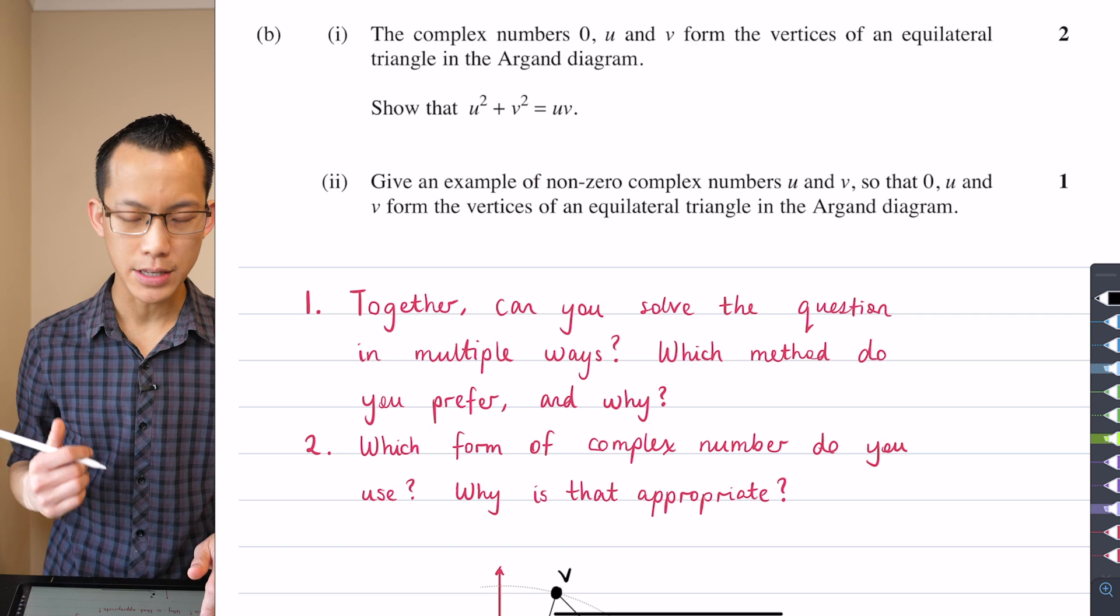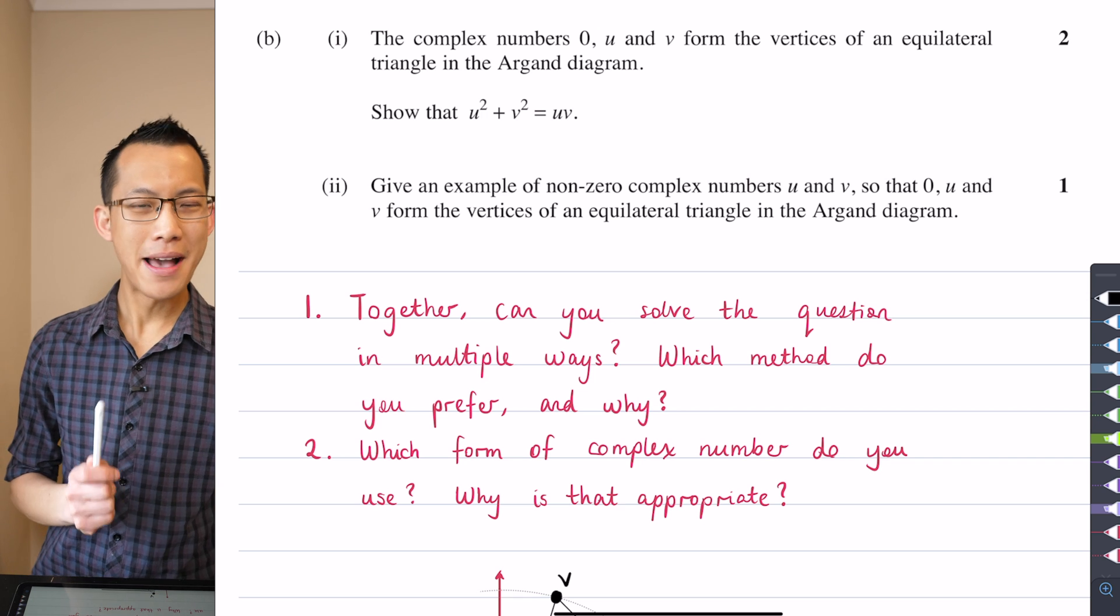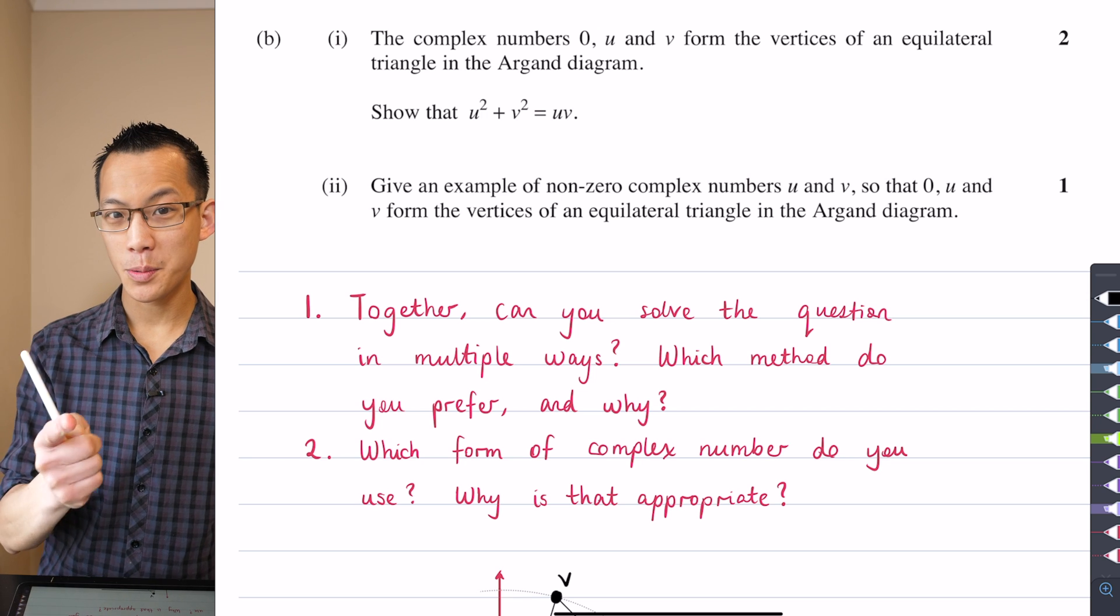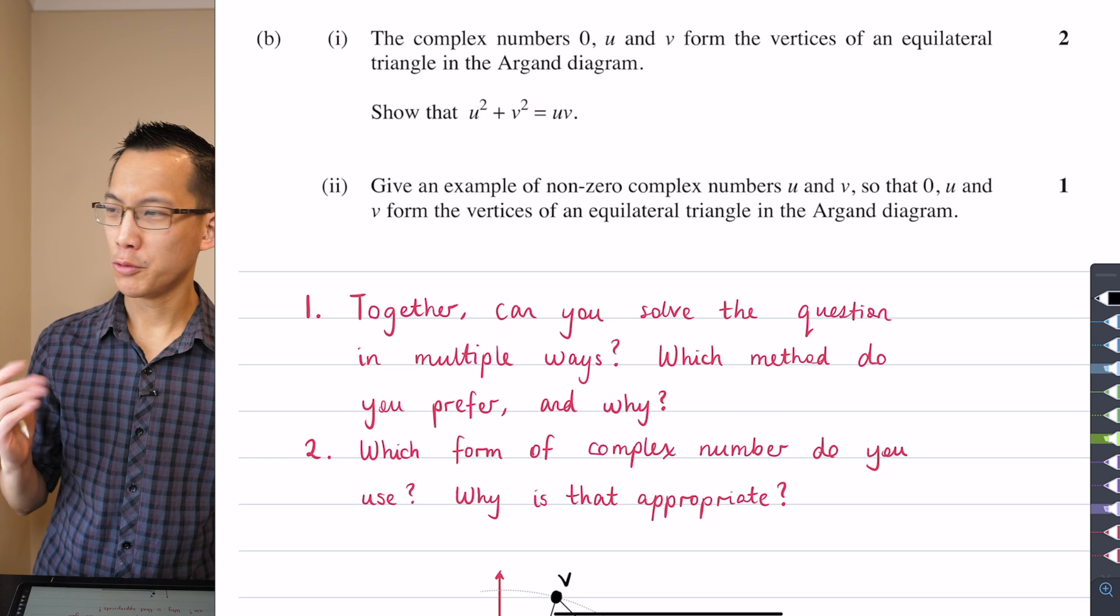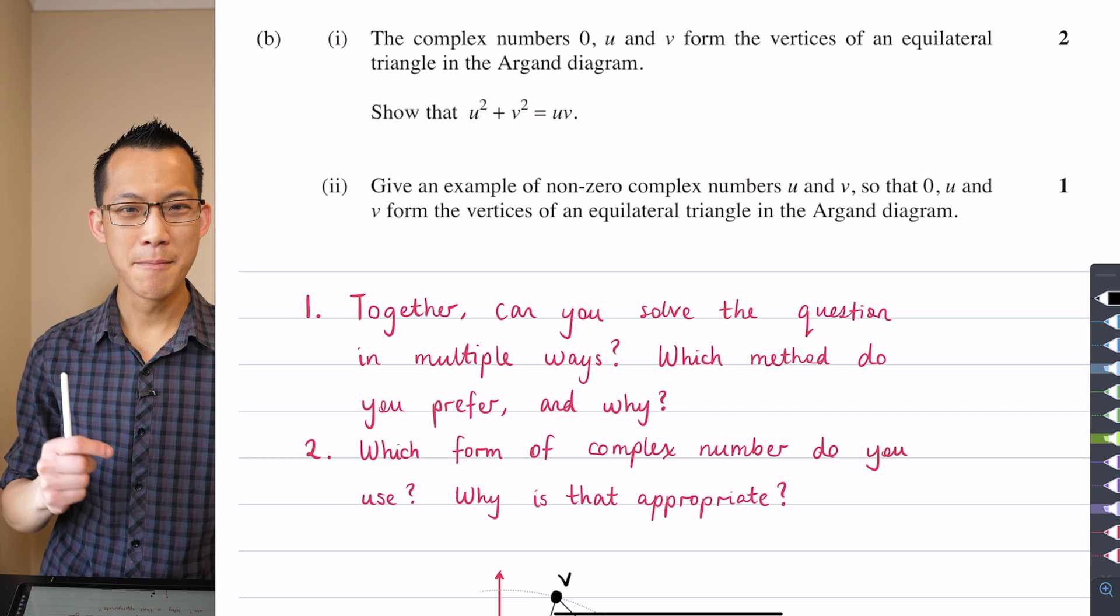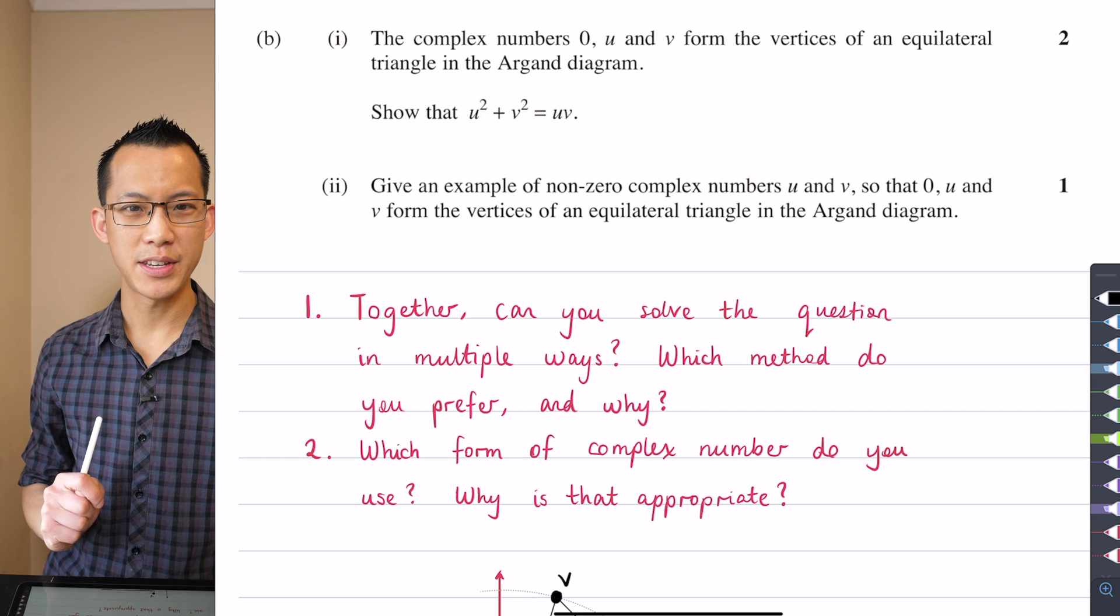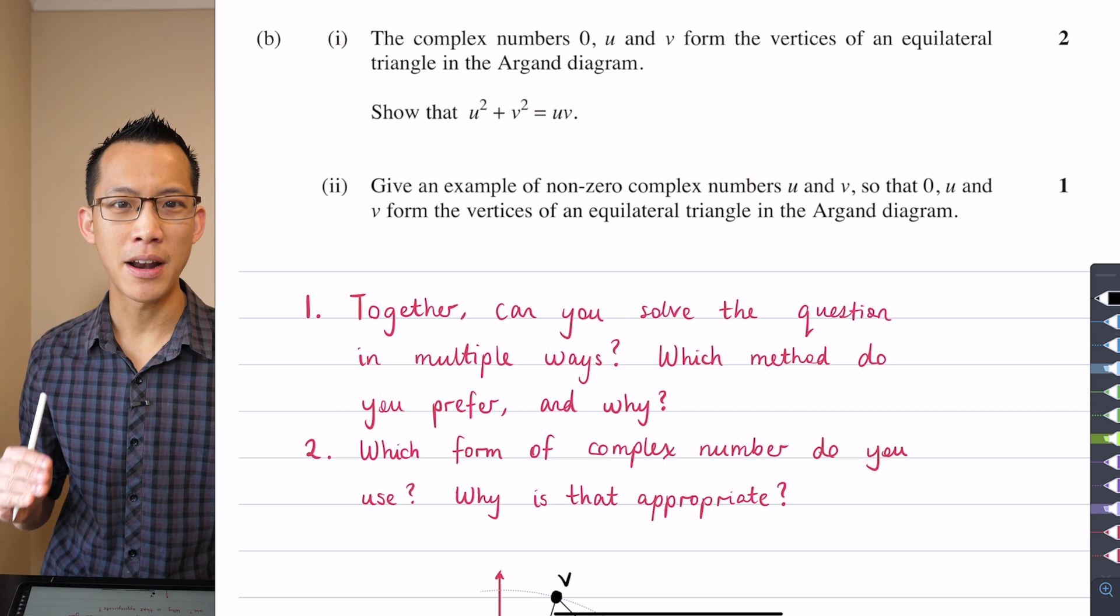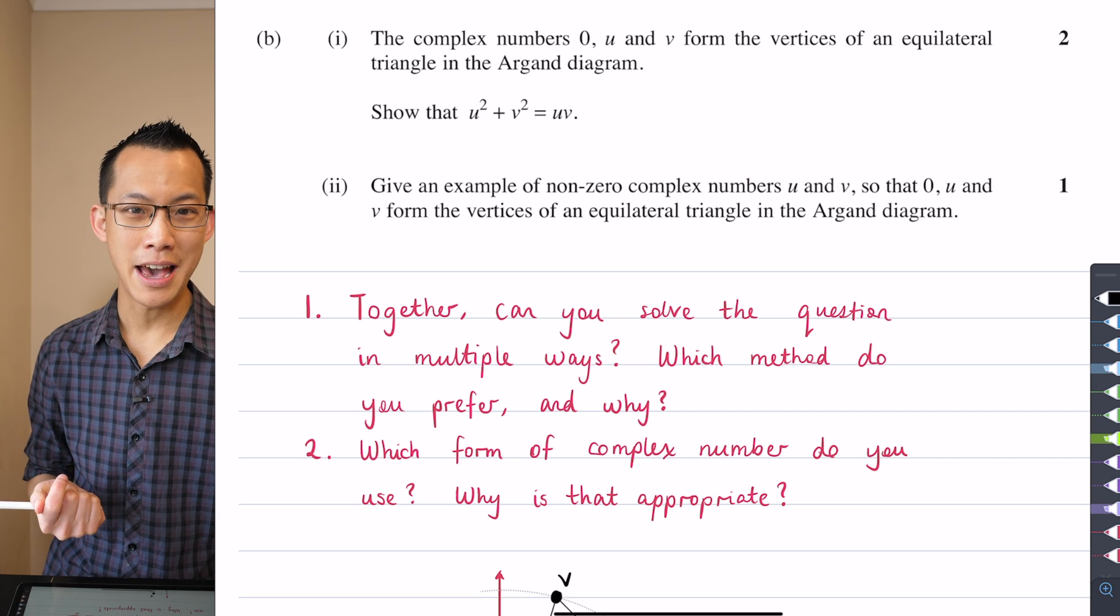Now I've got my 0, my U, and my V, and I'm going to try to use this diagram to help me show this result: why is U squared plus V squared equal to UV? In order to do this, you can immediately see that I have to make a choice about what form of complex number I'm going to use. Which form of complex number did you choose? Can you post in the chat which form you used first?